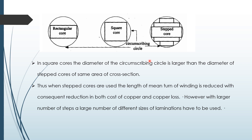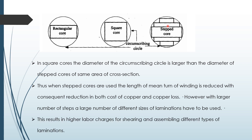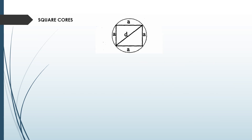However, a large number of different size laminations have to be used. This means that if you are using a step core, you need a number of laminations of different sizes, which will increase the cost of manufacturing but reduces the area wasted. This results in higher labor charges while laminations need to be stacked together, so assembling charges are also large compared with the square core and rectangular core.